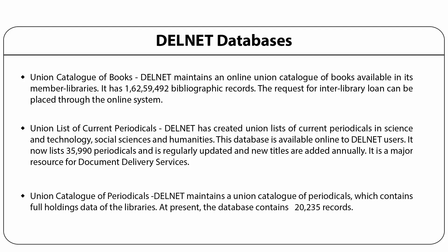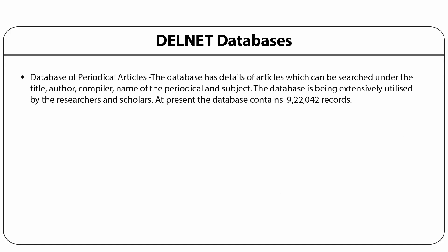It is a major resource for document delivery services. The union catalogue of periodicals contains full holdings of member libraries, with the database currently containing 22,235 records. The DELNET database has details of articles which can be searched by title, author, compiler, name of periodicals, and subject. The database is being extensively utilized by researchers and scholars, and currently contains 9,22,042 records.